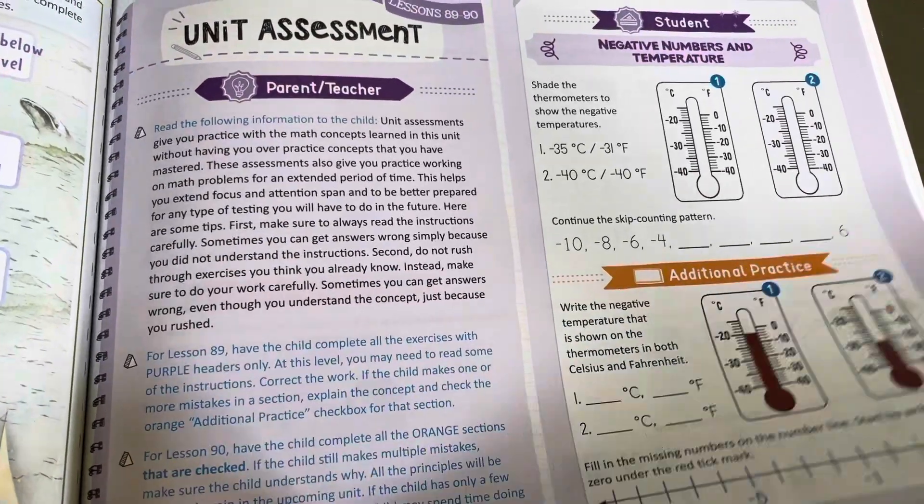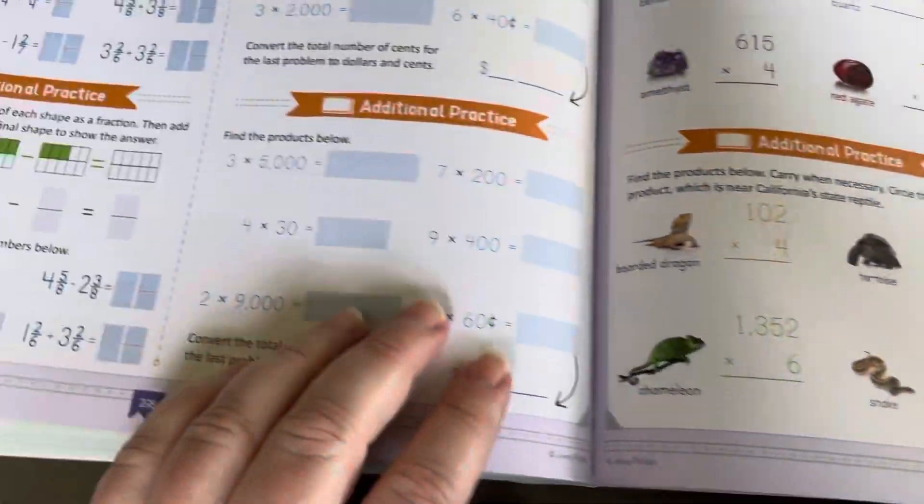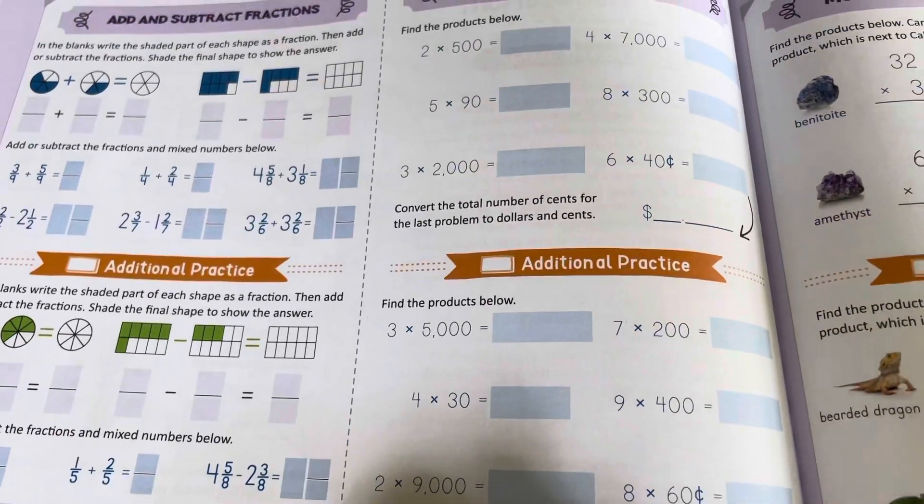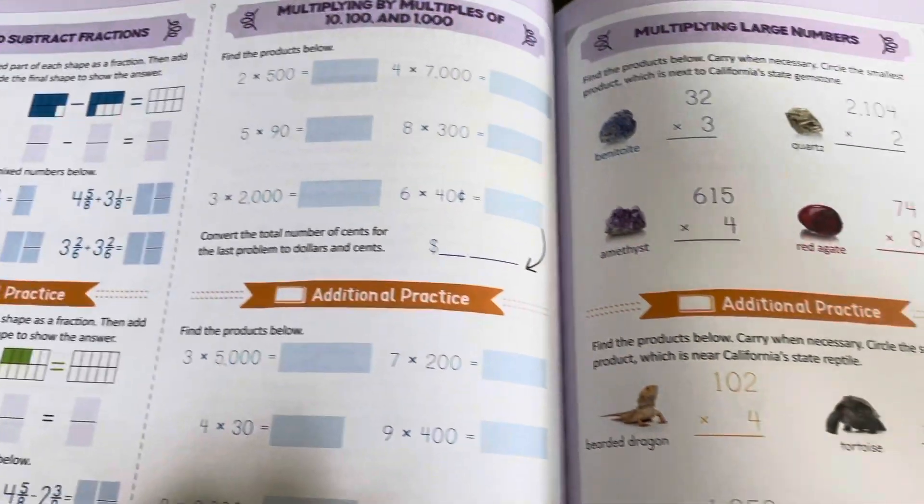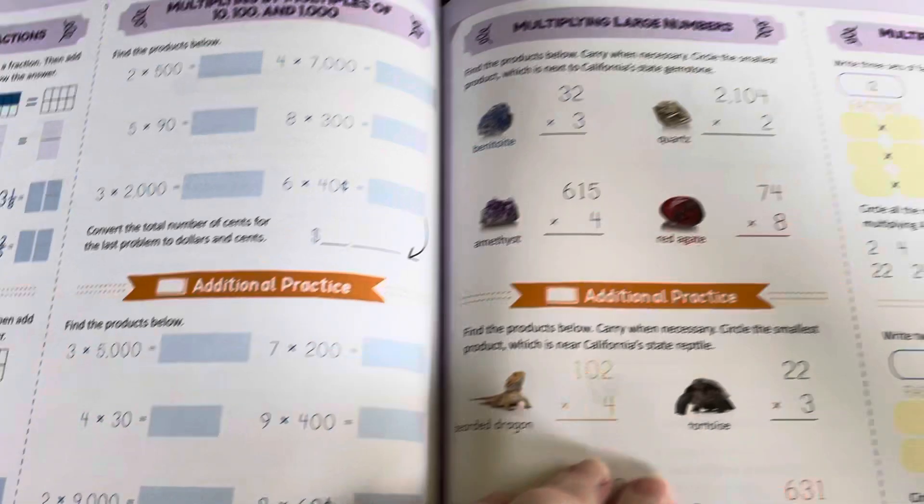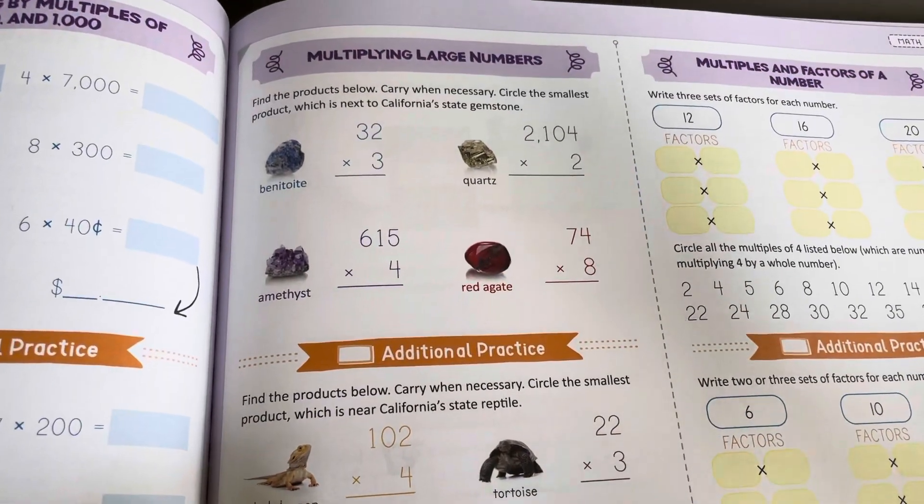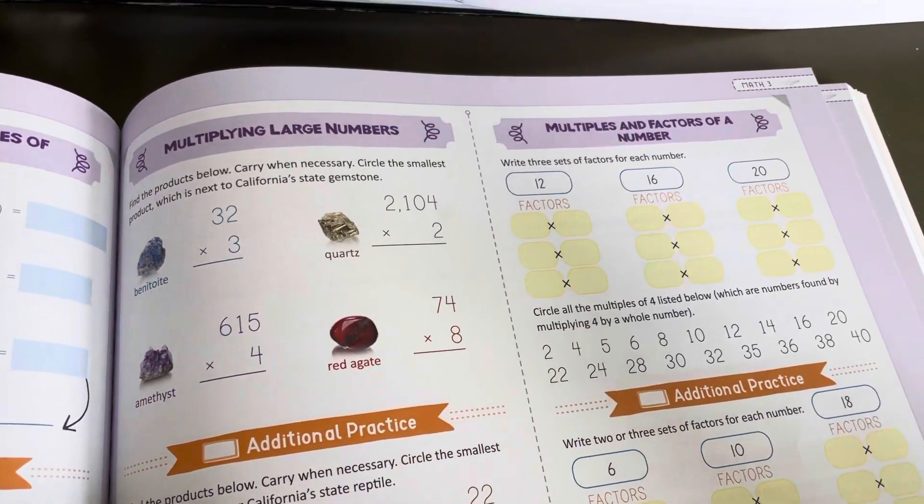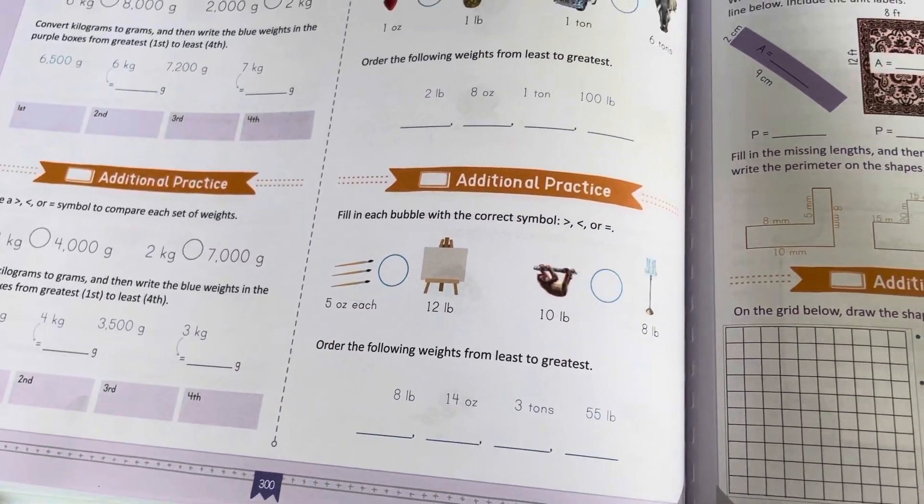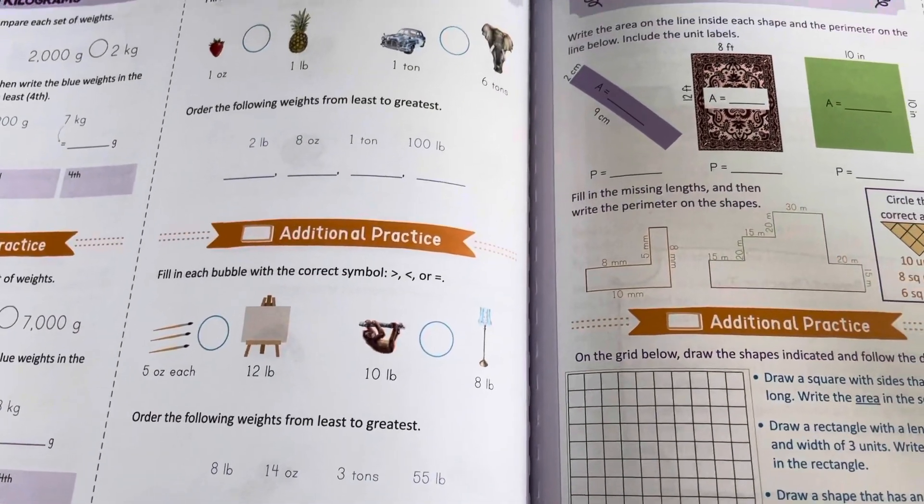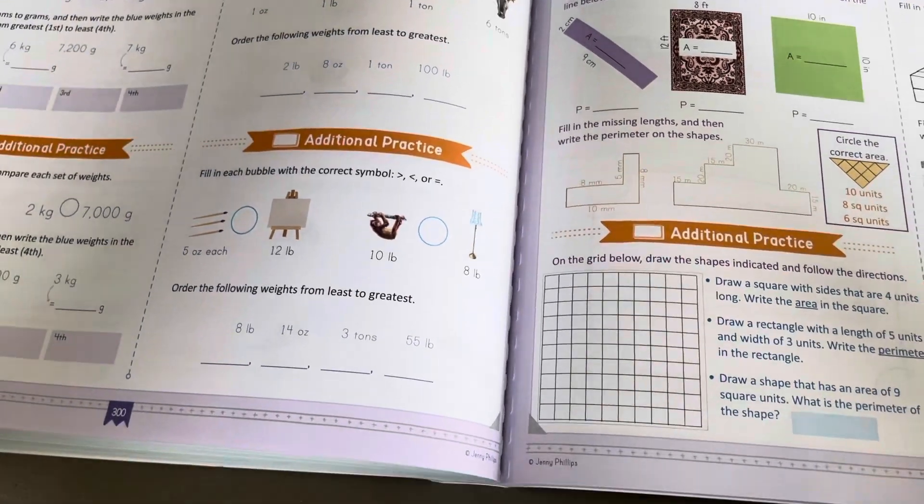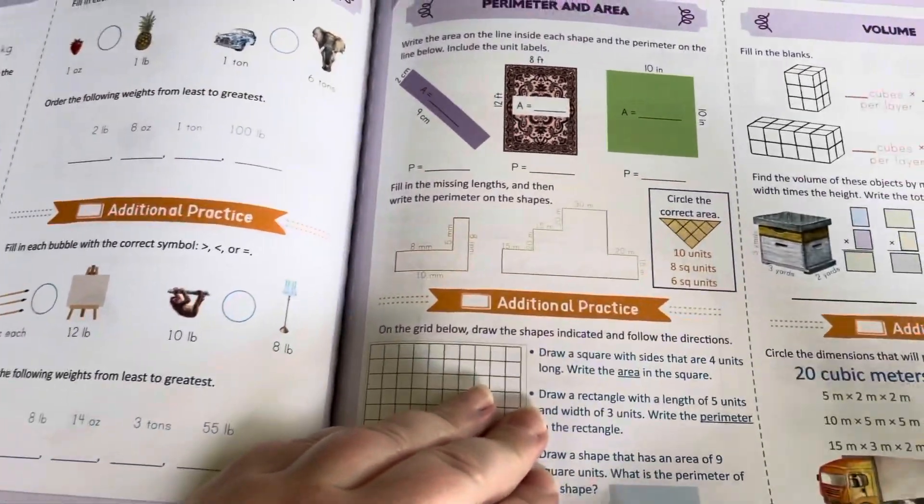So, here would be the third assessment I believe. You have negative numbers. Wow. I didn't know we'd be learning negative numbers. You have temperature, fractions, multiplication, multiplication by one number, temperature, factors, metric and US measurements.